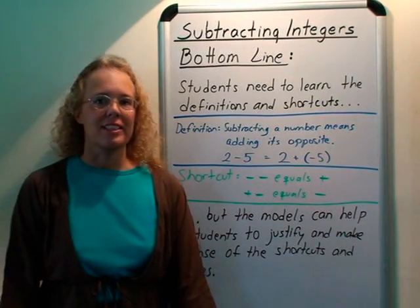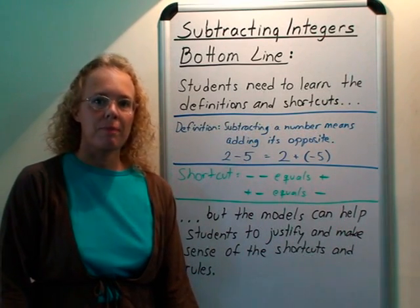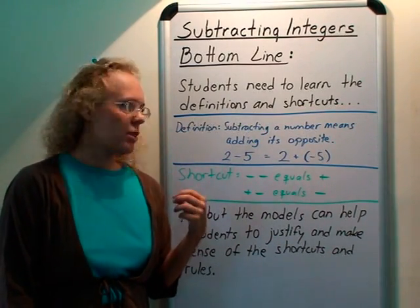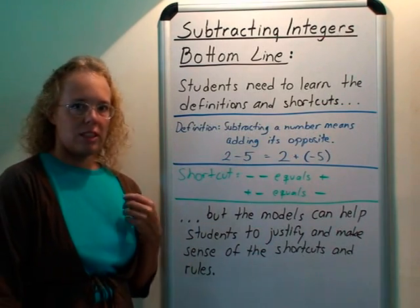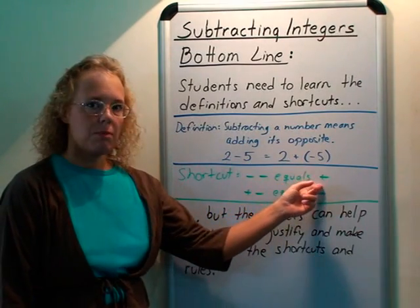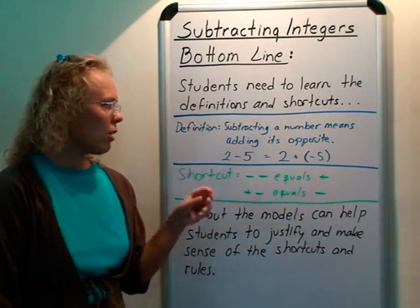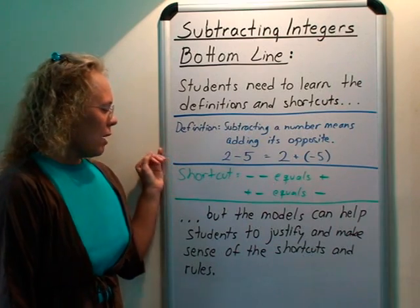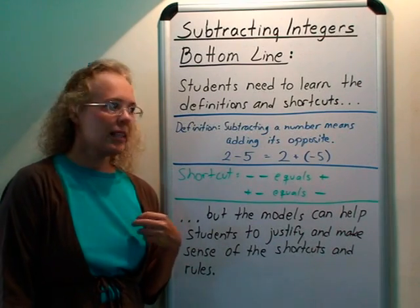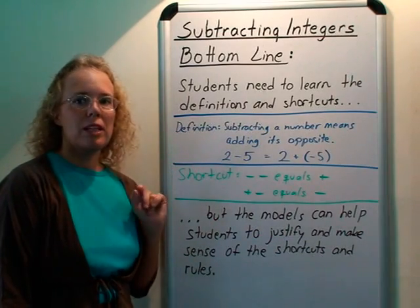So the bottom line in all this is that students do need to learn the various rules, definitions and shortcuts that we can give them. For example, a definition in a school book might be that subtracting a number means adding its opposite. Or the teacher might give a shortcut that if you have negative negative double negative then it's the same as writing a plus sign instead of it. Or plus minus is the same as just writing single minus. And these are all good and students should learn to use them. But the models that we looked at previously can help students to justify and make sense of these rules and shortcuts, especially in the upper elementary and middle school level.